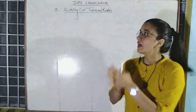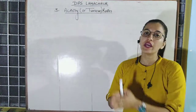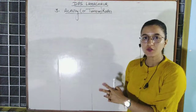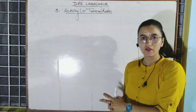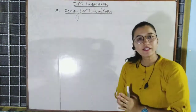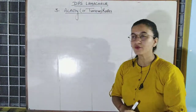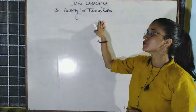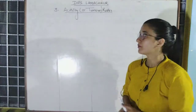Hello everyone. As in the previous session we discussed two types of ratios: first is liquidity ratio, second was solvency ratio. So now in this session we will be discussing the third type of ratio, which is activity ratios or we can call it turnover ratios.